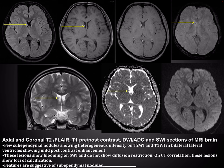Another case shows axial and coronal T2 FLAIR, T1 pre- and post-contrast, diffusion and susceptibility weighted images. Few subependymal nodules are noted in bilateral lateral ventricles showing heterogeneous intensity on T2 and T1 weighted imaging, with mild post-contrast enhancement and blooming on SWI, and do not show any diffusion restriction. On CT correlation, these nodules were calcifications — features suggestive of subependymal nodules.